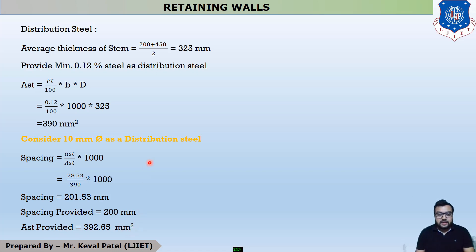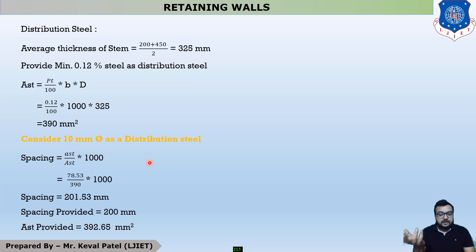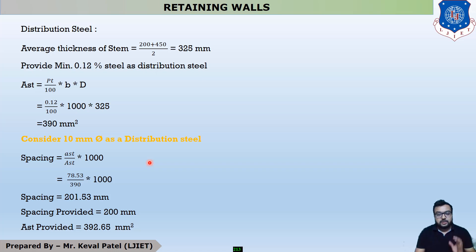This completes the design of the stem. To summarize: we found the height of stem h, then force, then moment, then factored moment, then Pt, Ast, spacing, spacing provided, and Ast provided — all repeated for distribution steel as well. In the next lecture, we will calculate the design of the heel slab and toe slab. Thank you.